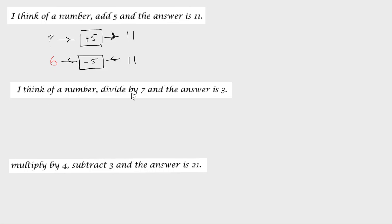Let's have a look at another one. I think of a number, divide by 7, and the answer is 3. This is one calculation again, so it's another one-stage function machine. The number I thought of, what do I do? I divide by 7 and my answer is 3.